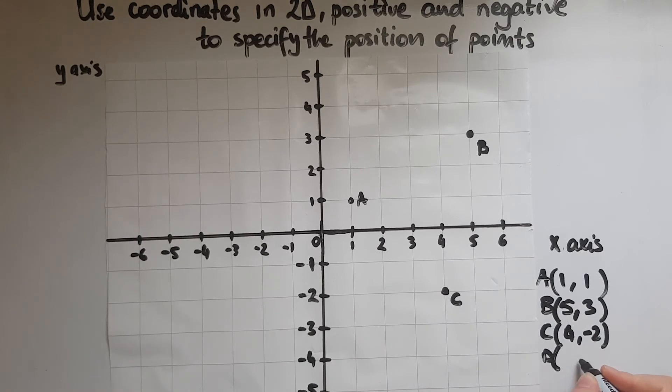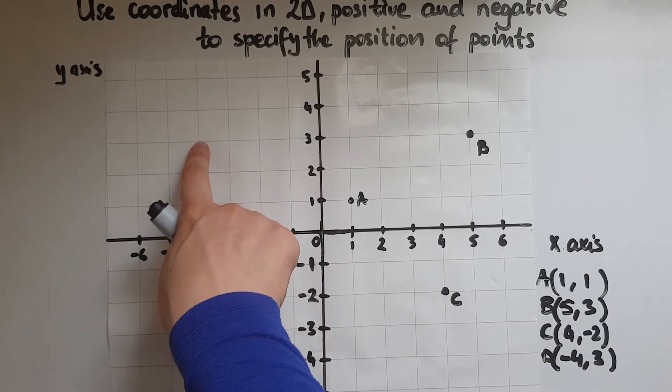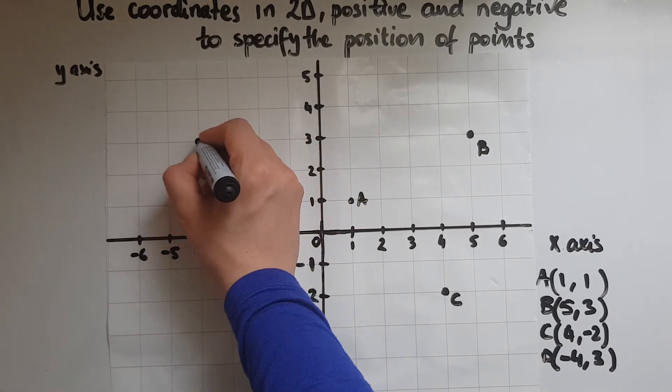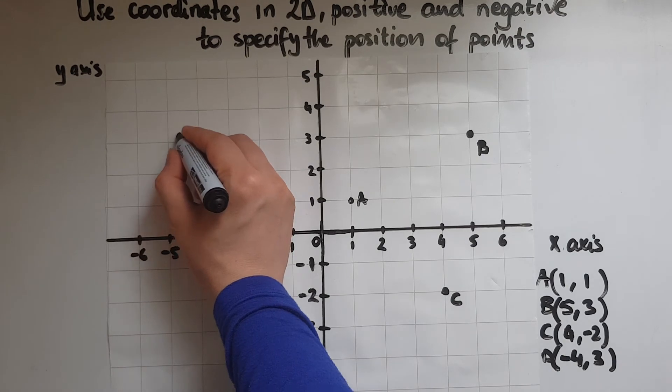Then, let's have a point D at (-4, 3). There is 4, but we need to go to minus 4 and then 3. We're going up to 3. This is point D.